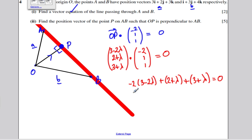Times it out, minus 6 plus 4 lambda, plus 2 plus lambda, plus 3 plus lambda, must equal 0.